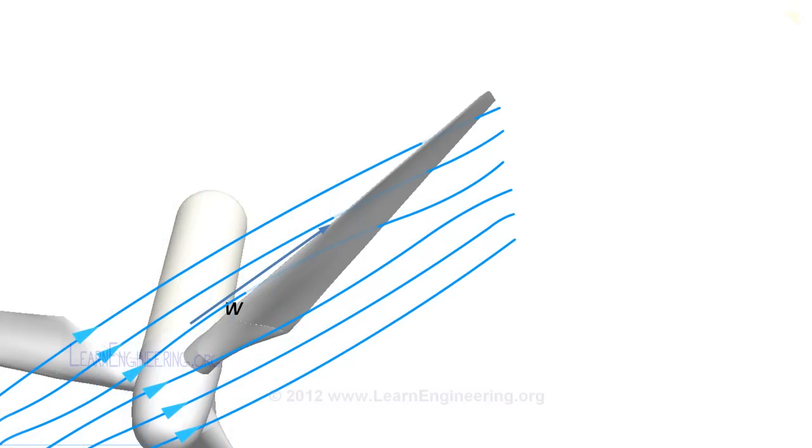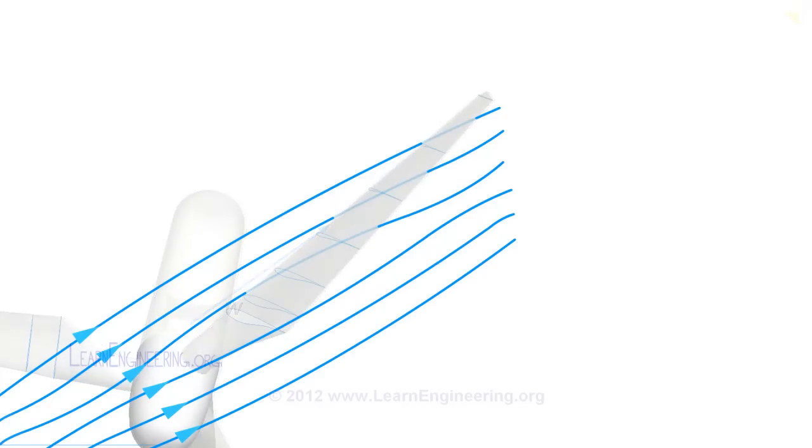A close look at wind turbine blade will reveal that it is having airfoil cross sections from root to tip. The driving force of wind turbine is lift force generated when wind flows over such airfoils. Lift force will be perpendicular to apparent velocity.